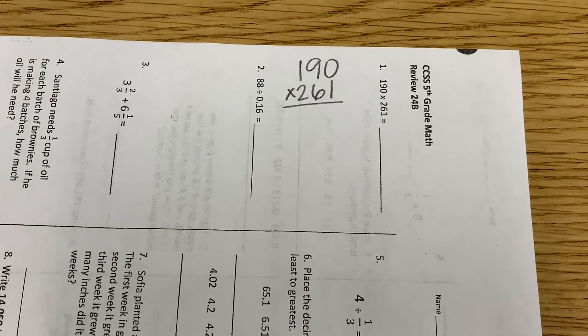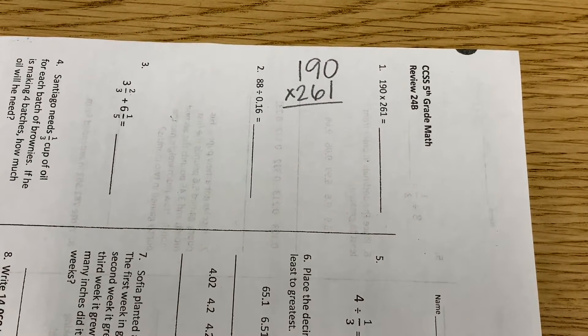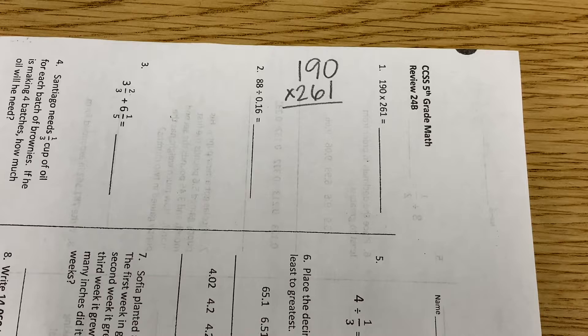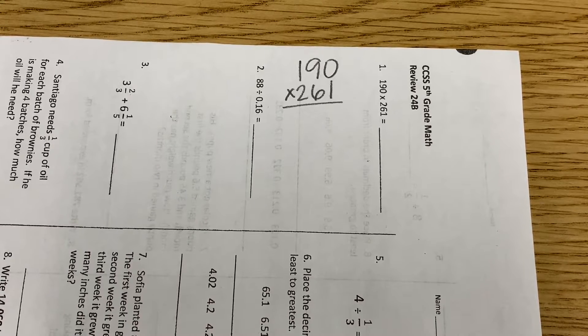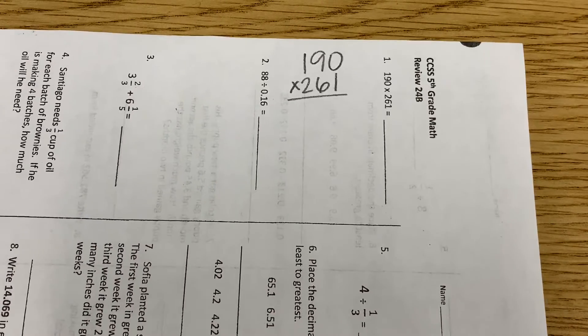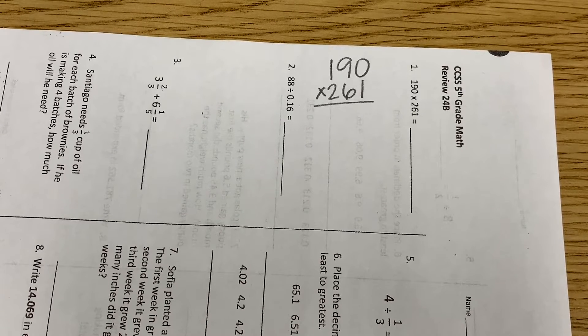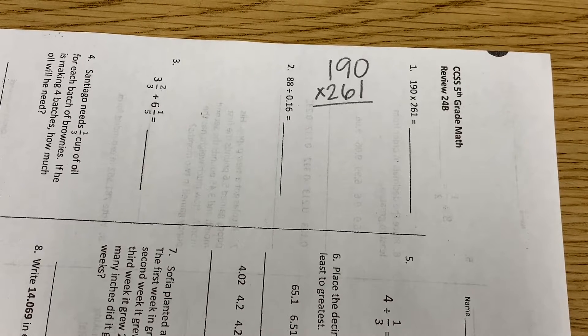Now, how many partial products am I going to have? Three. How do I know that? There's three digits in the second number, correct? Okay, so what am I multiplying first? One times, then one times, then one times.